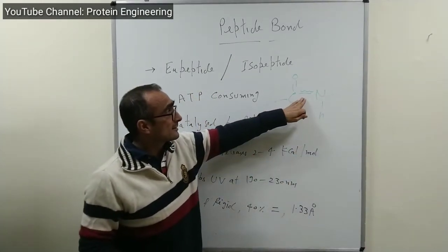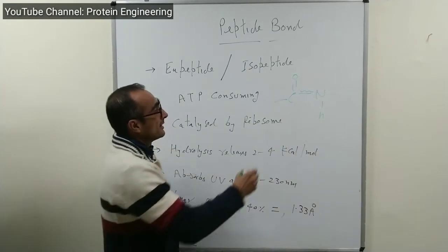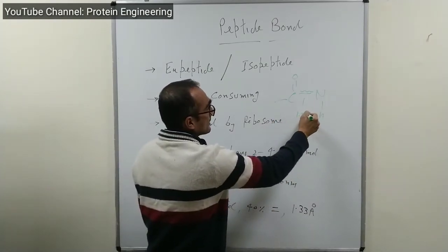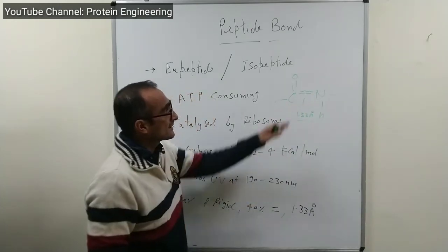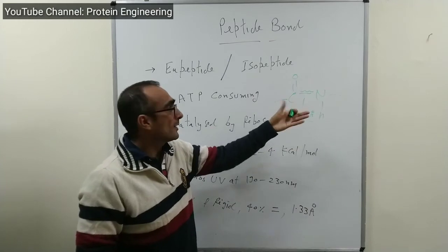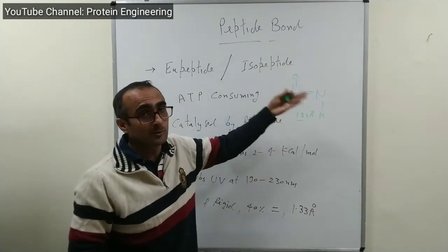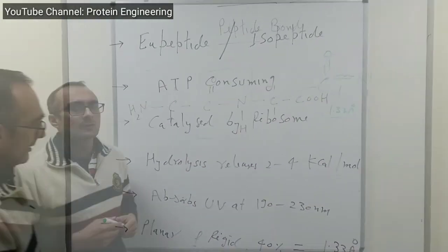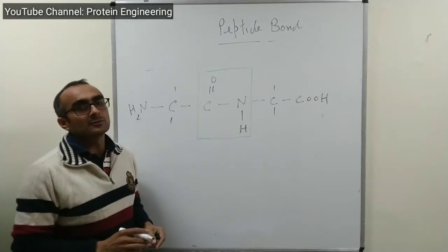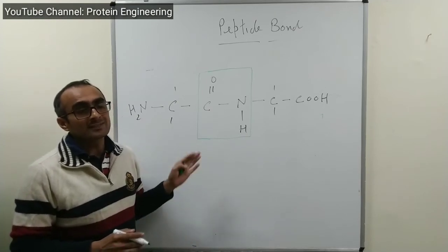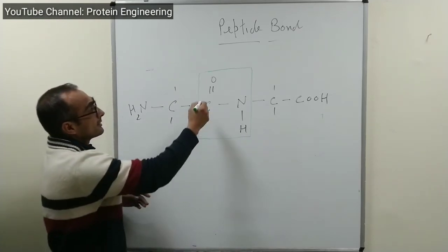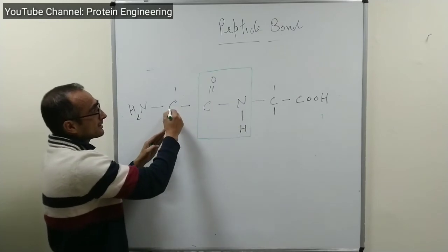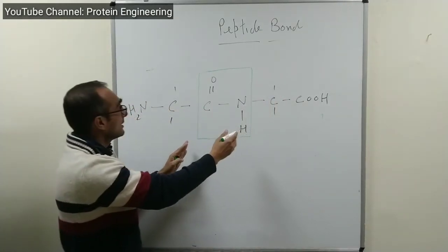Around 40 percent double bond character exists in the peptide bond. As a result of this partial double bond character, the C-N distance is reduced to 1.33 angstroms, which provides rigidity — the C-N bond cannot rotate freely. That is why the peptide bond can only have two possible configurations: cis or trans, defined by the omega angle. When the peptide bond is formed, it provides rigidity to the main chain. The C-O-N-H peptide bond is a rigid and planar structure.